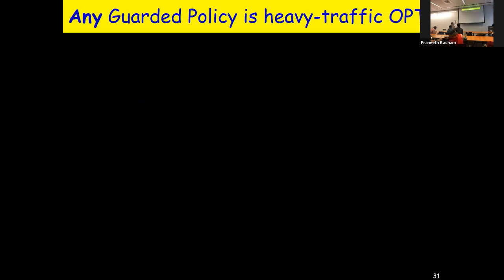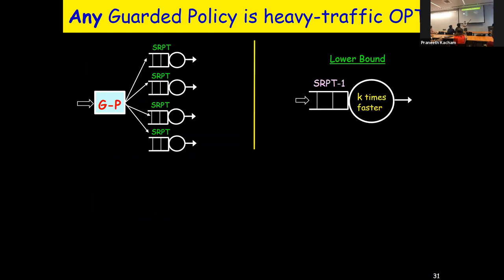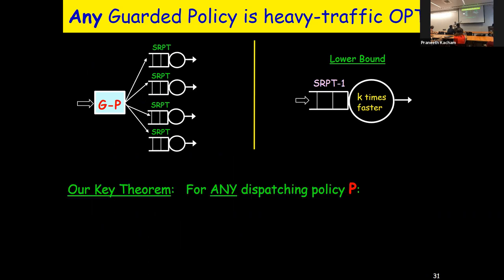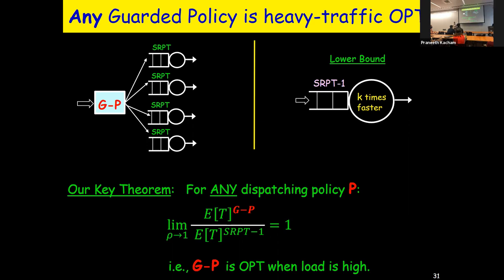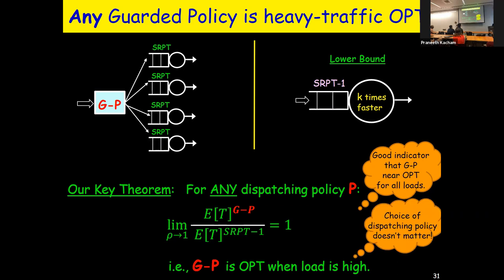Given guardrails, we can prove a nice theorem: for any dispatching policy P, the limit as load goes to one of the mean response time under guarded P divided by mean response time under SRPT-1 equals one. So guarded P is heavy traffic optimal. Remarkably, the choice of dispatching policy doesn't matter at all — any guarded policy achieves this. The guardrails dominate the behavior, not the underlying policy.